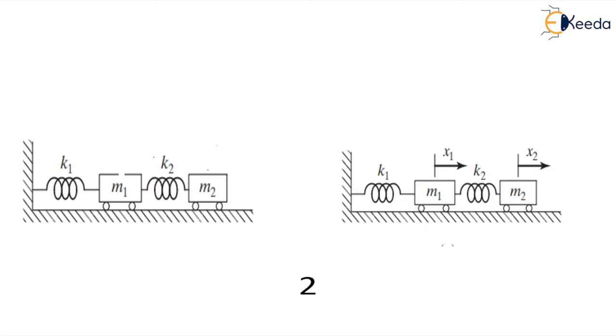Now the second question says two masses and two springs attached. We know for single mass spring system we need linear displacement to describe the position of all the parts of the system at any instant of time. So if there are two masses, two springs, we need two linear coordinates to describe the motion of the whole system. Therefore the degree of freedom for the system is 2.